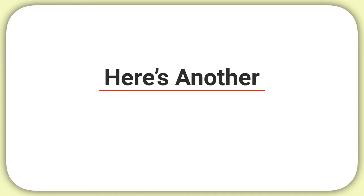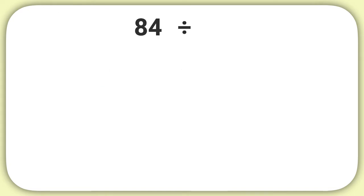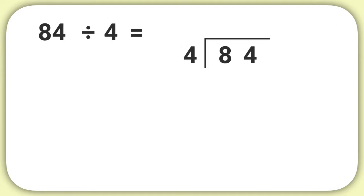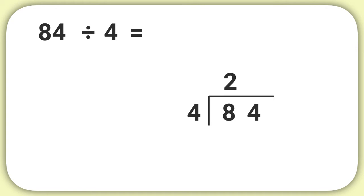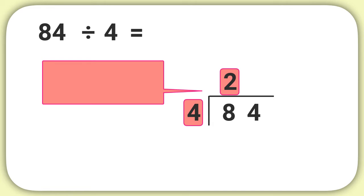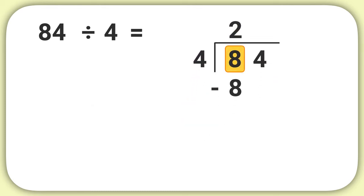Now here's another problem to practice with. Let's figure out what 84 divided by 4 equals. After organizing our problem, we always start with our first digit — this 8 — and divide it by 4. We can think: 8 divided by 4 equals 2. We write that 2 above the line. Then we multiply 2 times 4, which equals 8, and write minus 8 into our problem. When we subtract 8 minus 8, we get 0, then we need to bring down our next digit.